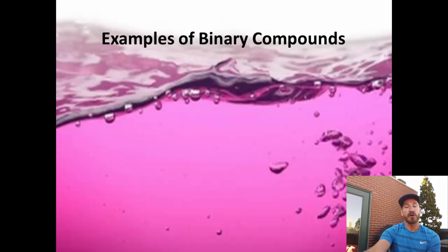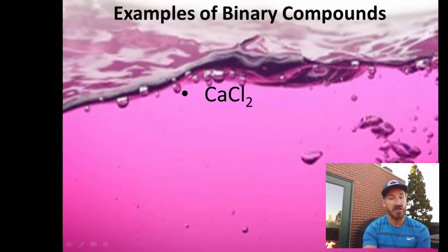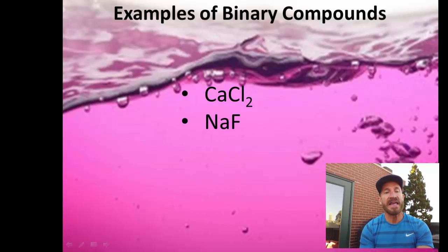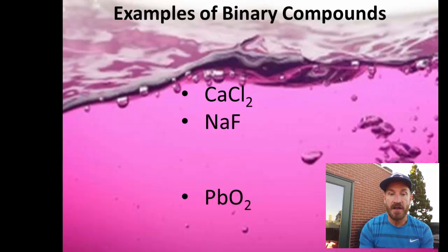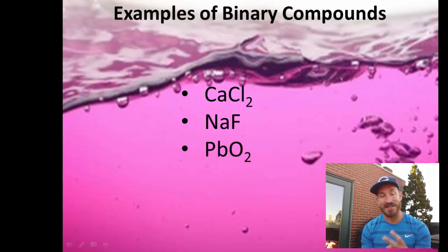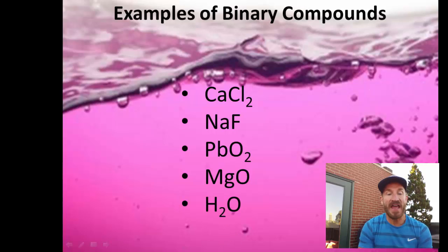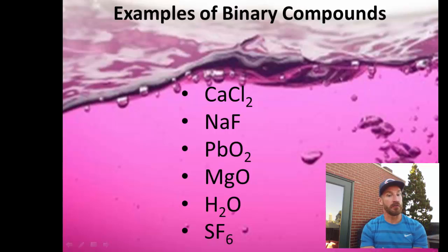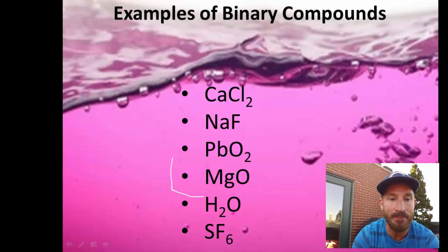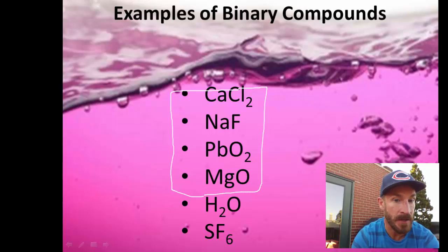Let me go through some examples of binary compounds. We have CaCl₂ — that's calcium chloride. NaF — sodium fluoride, two different elements. PbO₂ — lead four oxide, two different elements. MgO — magnesium oxide, two different elements. H₂O — we'll just call that water, two different elements. SF₆ — sulfur hexafluoride, two different elements. We're going to learn today how to name the top four, because all of those contain a metal and a nonmetal: calcium, sodium, lead, and magnesium.